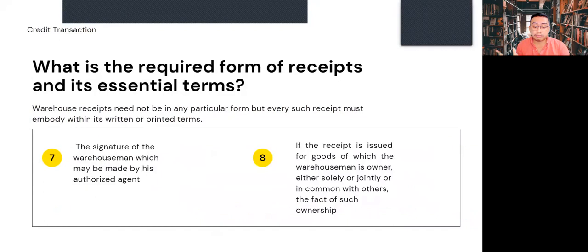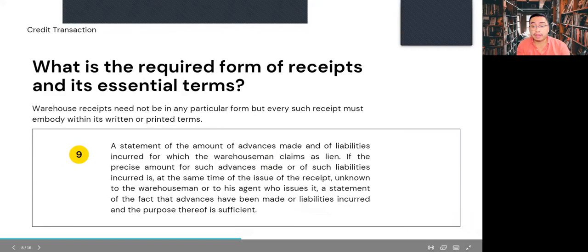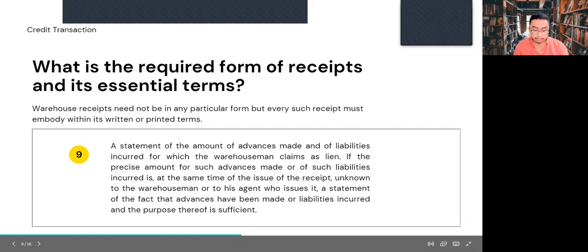Though generally in some jurisdictions a person engaged in the business of warehousing has no power to issue warehouse receipts on goods owned by himself, under this Act a warehouse man may also validly issue receipts for his own property stored in his own warehouse. However, such fact of ownership must be stated in the warehouse receipt. Additionally, a statement of the amount of advances made and of the liabilities incurred for which the warehouse man claims a lien must be included. If the precise amount of such advances or liabilities is unknown to the warehouse man or his agent at the time of issue, a statement that advances have been made or liabilities incurred and the purpose thereof is sufficient.